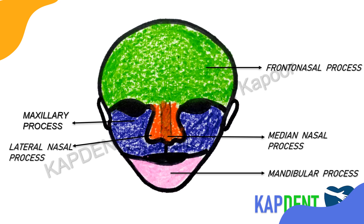Take note that the upper lip is formed by the approximation of the maxillary process from both sides with the frontonasal process, while the philtrum is mainly derived from the maxillary process alone.